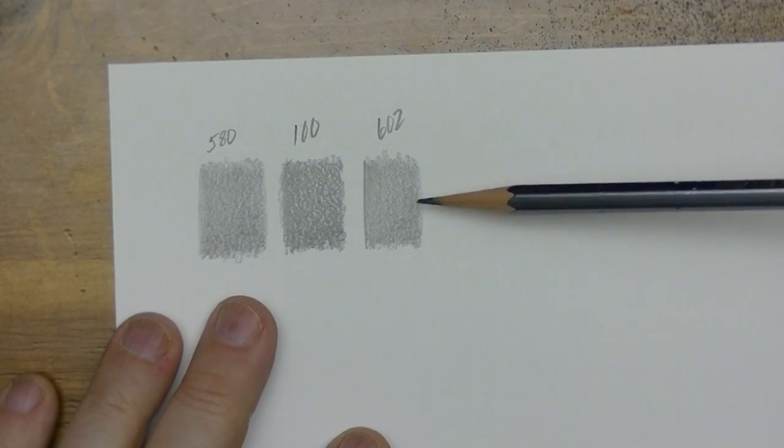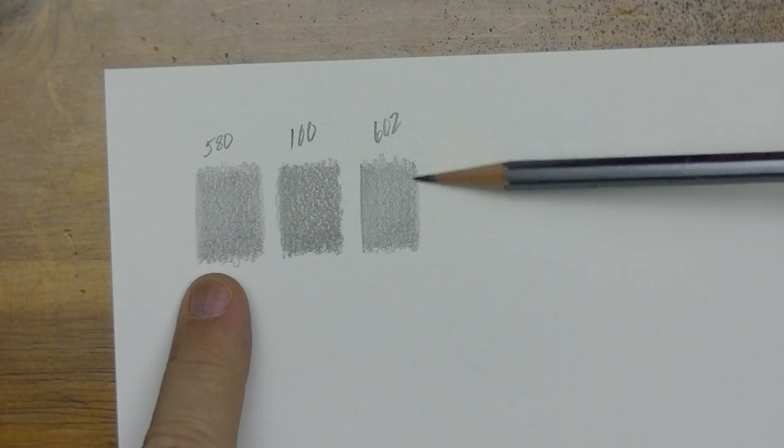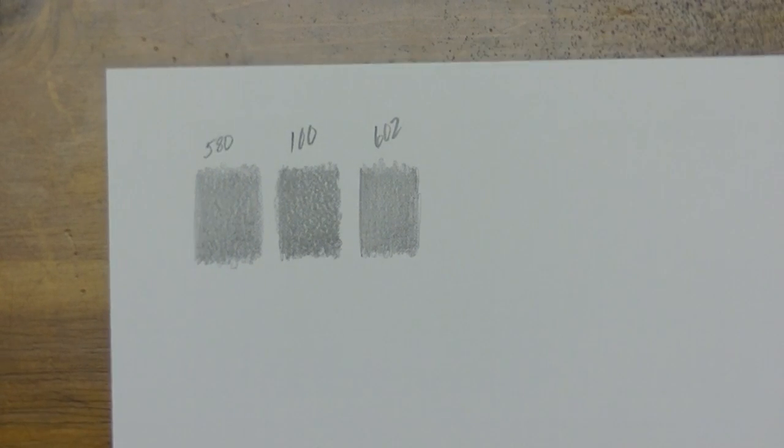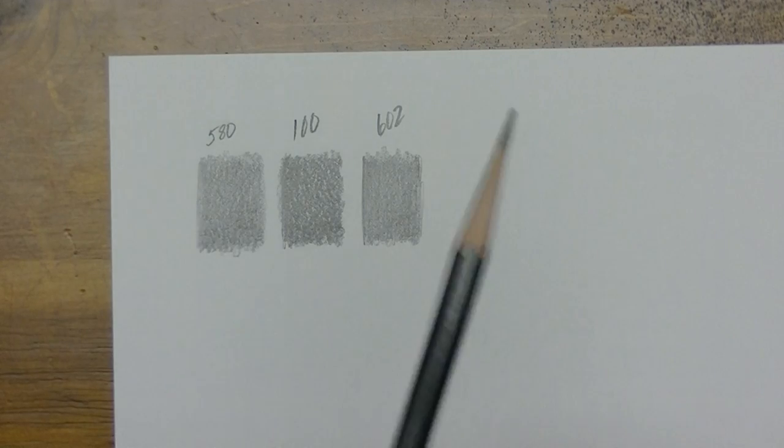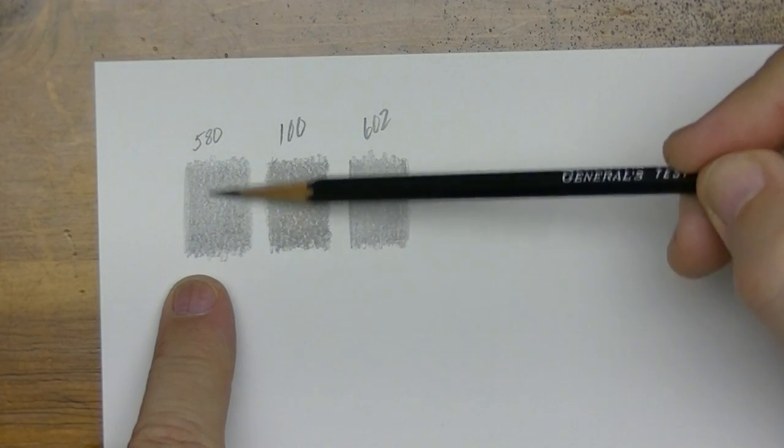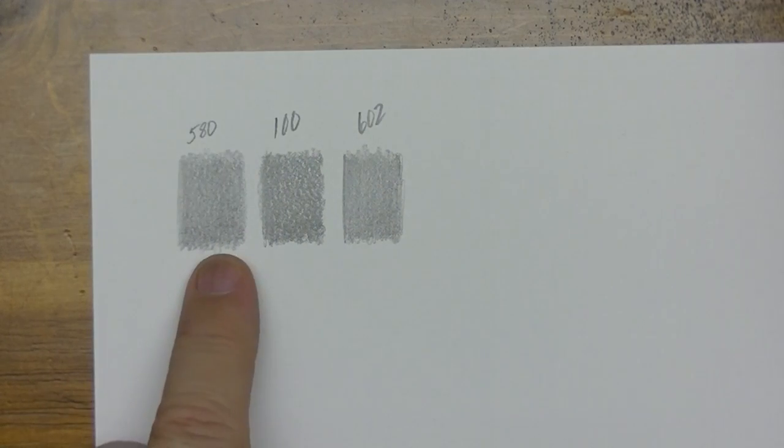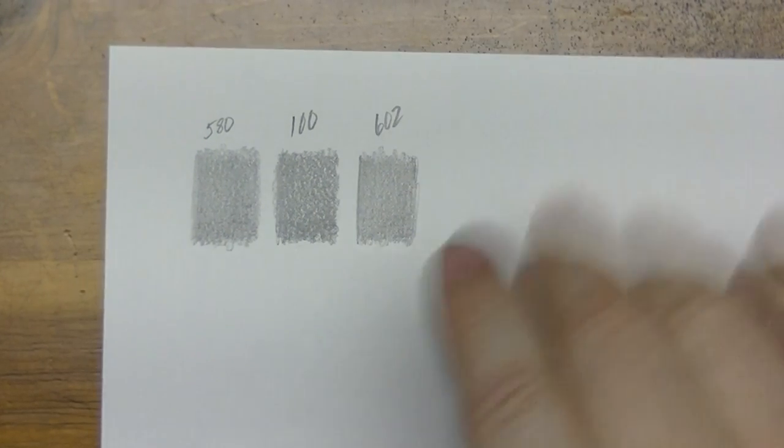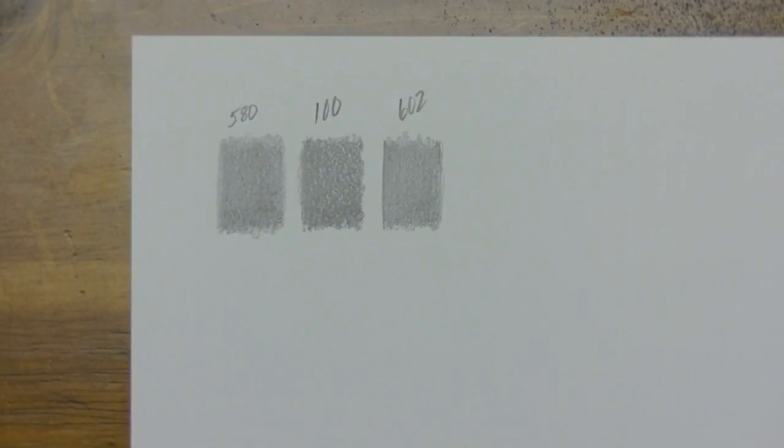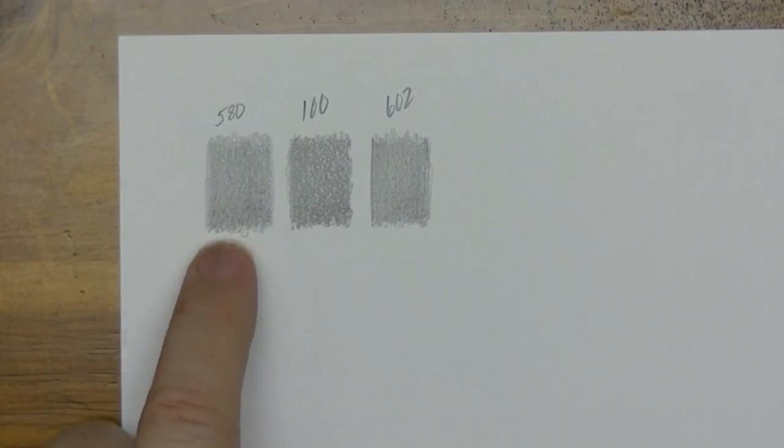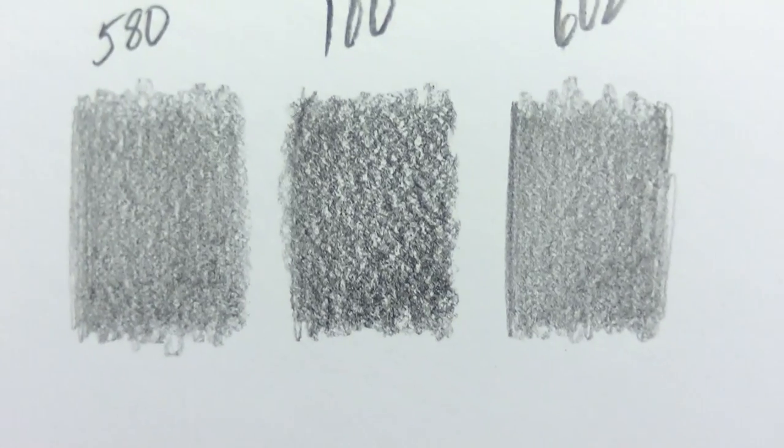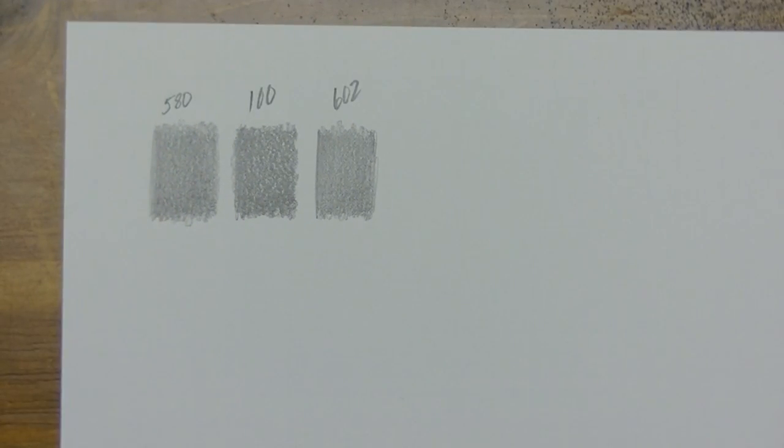I'm getting a different texture here too so that's a little different. You can see same paper but slightly different texture. The 602 has more coverage and I'm noticing I'm getting more glare of course from the 580 which is its job, it's supposed to do that. But there you can see a comparison there. That 100 is definitely nice and dark.